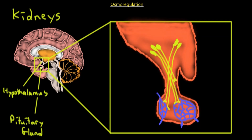Now let's zoom in on what's going on within our hypothalamus and pituitary gland structure. The water potential is monitored by the hypothalamus, which contains osmoreceptors. These osmoreceptors detect whether or not the water levels are at homeostasis. If the water levels are low, the hypothalamus reacts by triggering signals that go down to the pituitary gland.